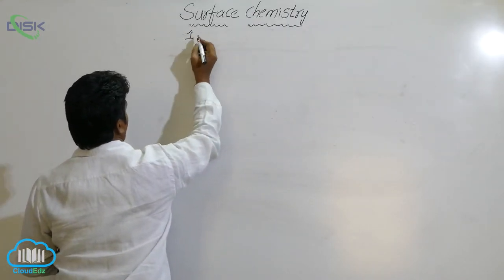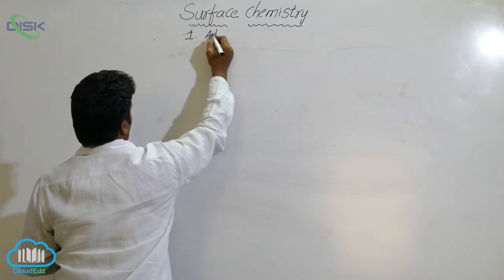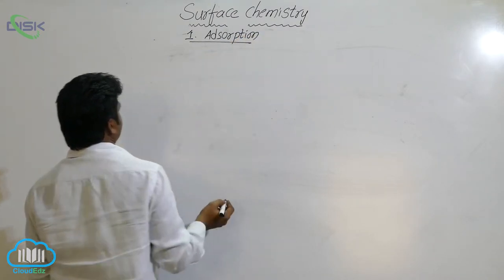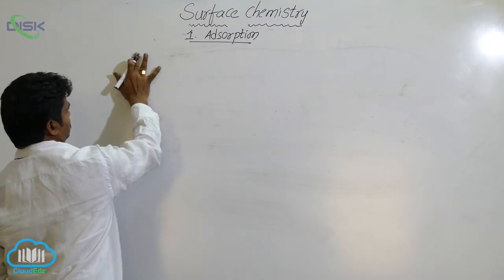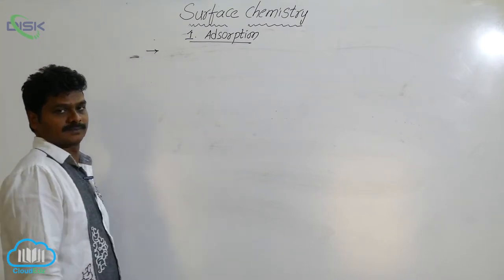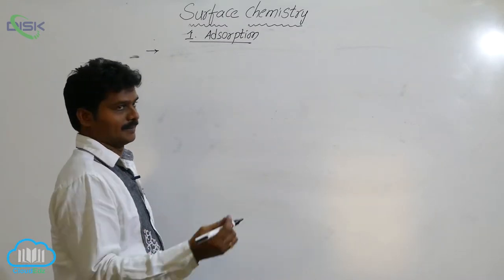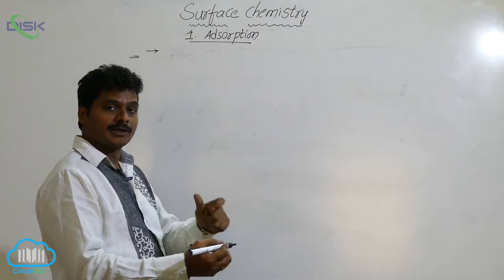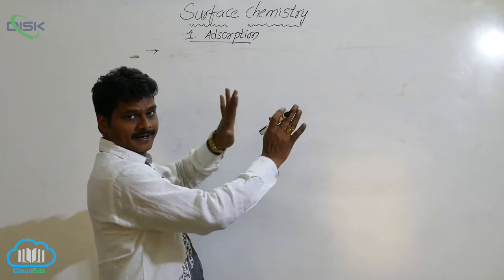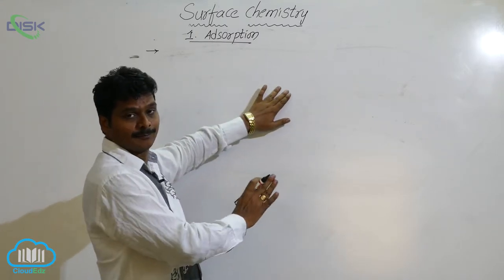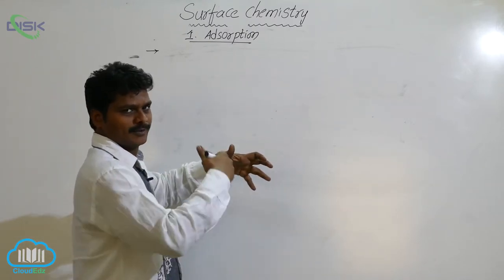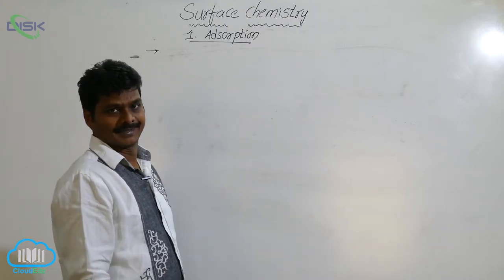The first topic in surface chemistry is adsorption. What is the definition of adsorption? When I write some words on this board with a marker pen, the molecules of ink concentrate or accumulate on the surface of the board. These molecules do not enter into the bulk of the board; they do not penetrate into the board. That is adsorption.